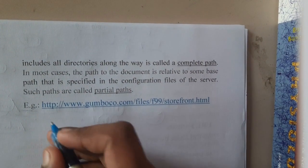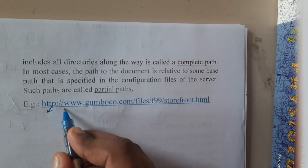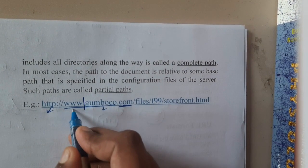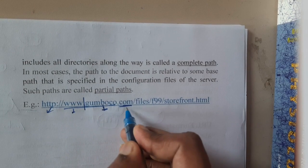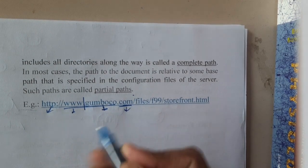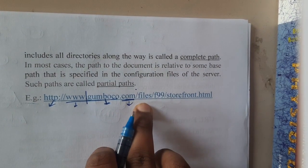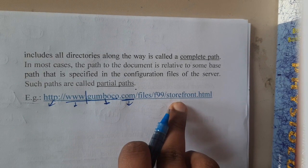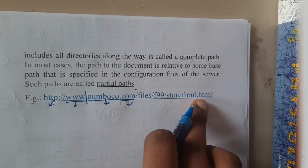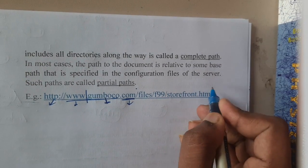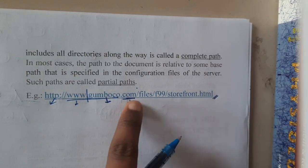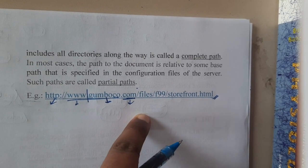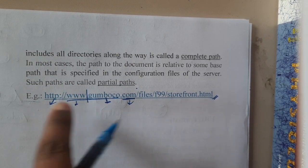For example: HTTP is the protocol, www.domainname.com is the domain name with the .com extension for commercial use. Inside the files folder we have an f99 folder, and inside that we have store-font.html as the file name. This file will be opened directly and it is located at that path. I hope everyone got a clear idea about the URL now.